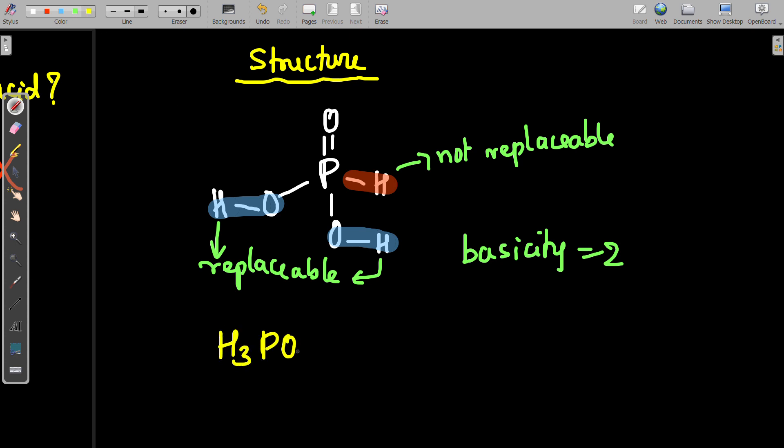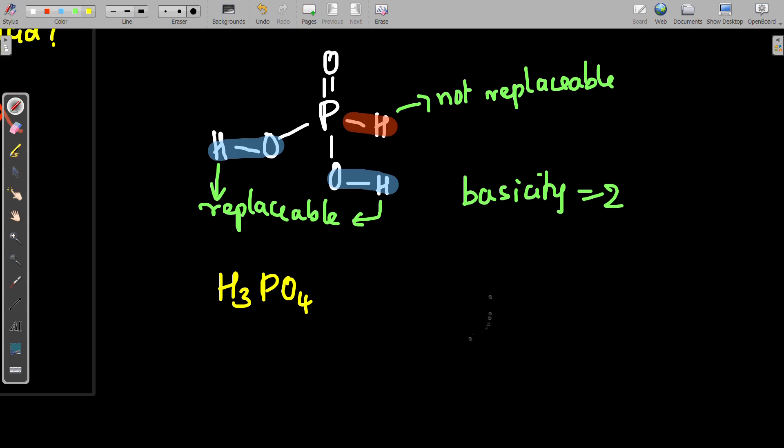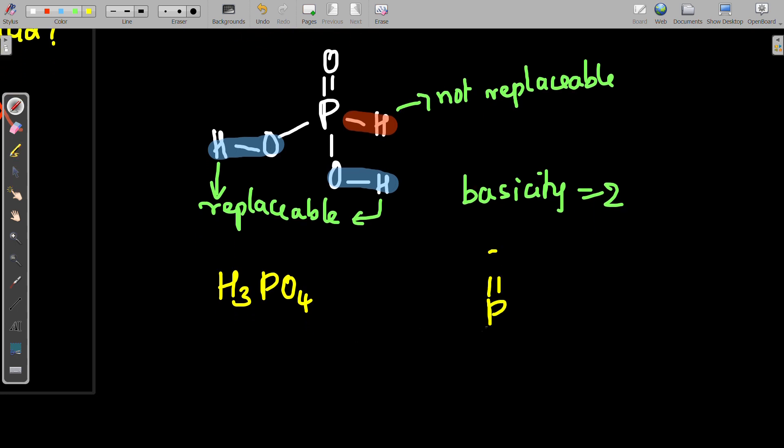Phosphoric acid is H3PO4. When you draw the structure of H3PO4, you will find P double bond O, OH, OH, OH. Since all the hydrogens are attached to oxygen, all the three are replaceable.